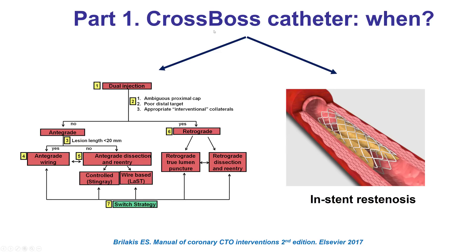When should the CrossBoss catheter be used? According to the hybrid algorithm, the antegrade approach is chosen if there is a clear proximal cap and a good distal target. If the lesion is less than 20 millimeters, antegrade wire escalation is performed, whereas if it's more than 20 millimeters, ADR is performed. A subgroup particularly advantageous for using the CrossBoss is in-stent restenosis, because the stent acts as a barrier to keep it inside the true lumen.